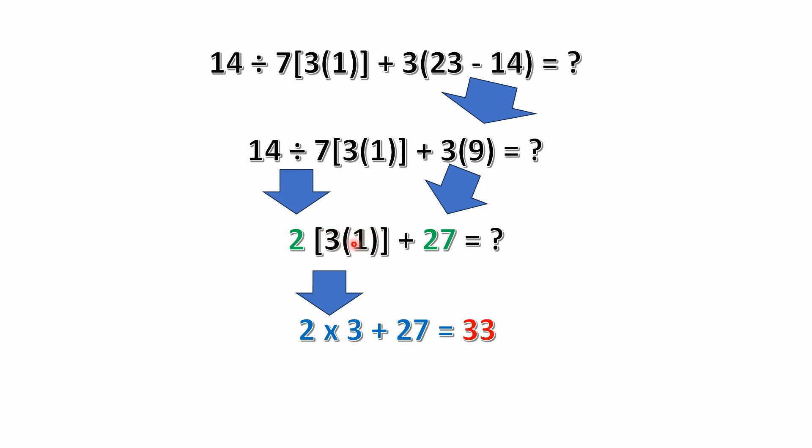Again, that's implicit multiplication. So what we're left with is 2 times 3 plus 27. Well, that's 6 plus 27 equals 33, and that would be our answer. So I hope this little work through has been helpful in solving this problem, and I look forward to seeing everybody in the next video.